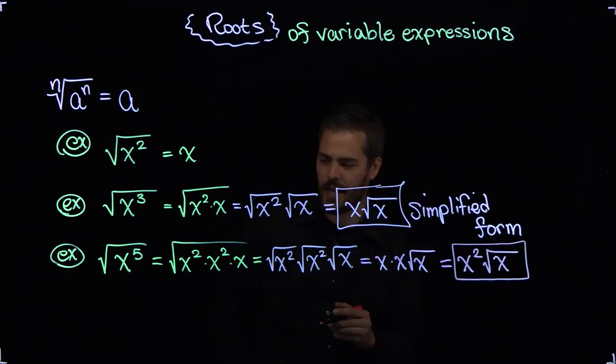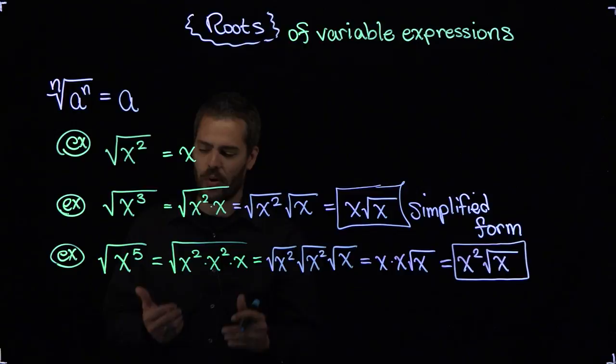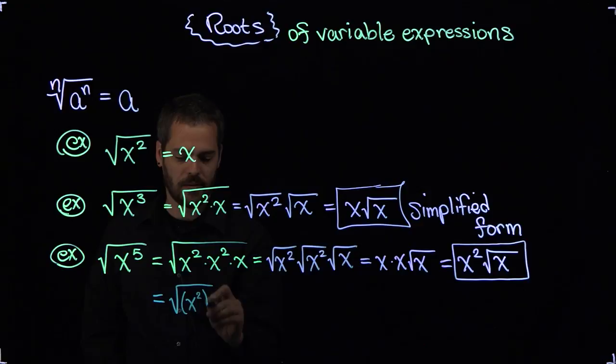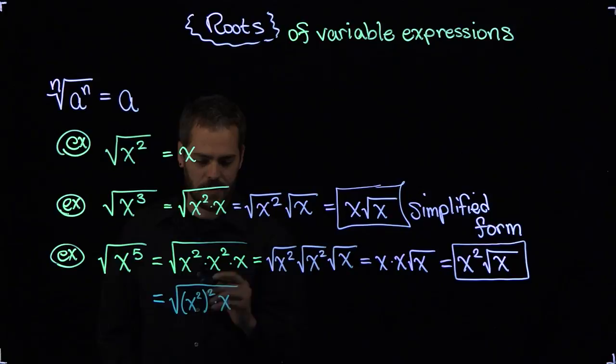Now you might have noticed that we're looking for squares, as I keep pointing out, because we're taking a square root. So interestingly enough, I could have said it this way. Don't we have x squared squared and that times x?